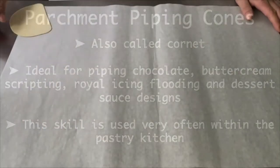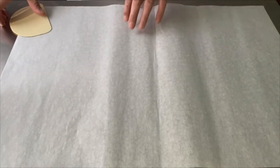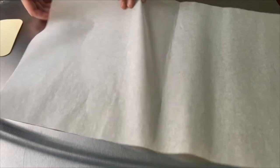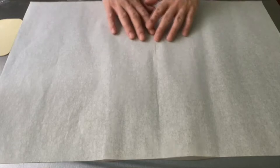Starting with a full sheet of parchment paper, you can cut the paper to make either 2, 4, or 8 parchment cones depending on your application. Today we will be making 8 small paper cones.